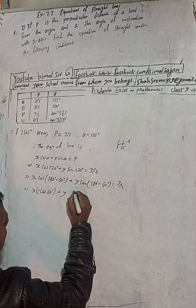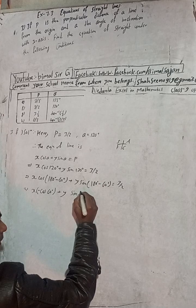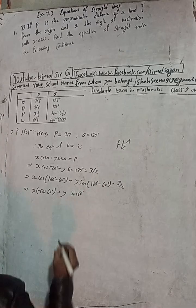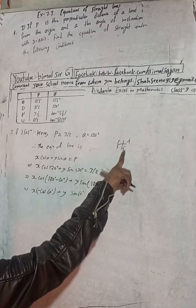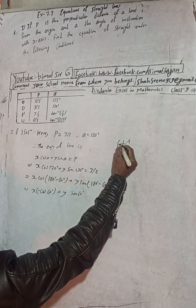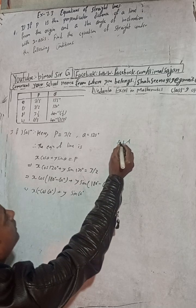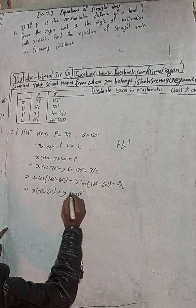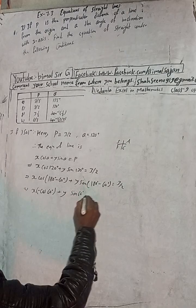By the CAST rules: 180 minus 60 means this is in the second quadrant. In the second quadrant, sine is positive and cosine is negative. So the sine term gives a positive value — no need to add a negative sign there. This equals 3/2.